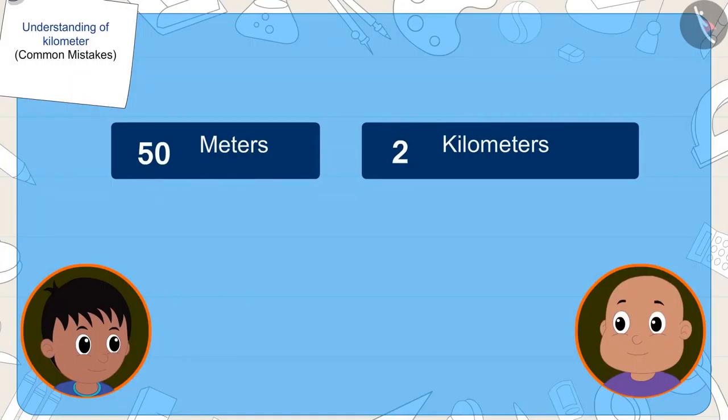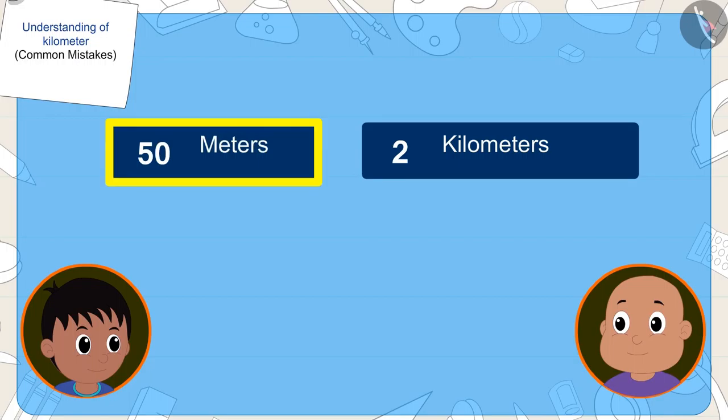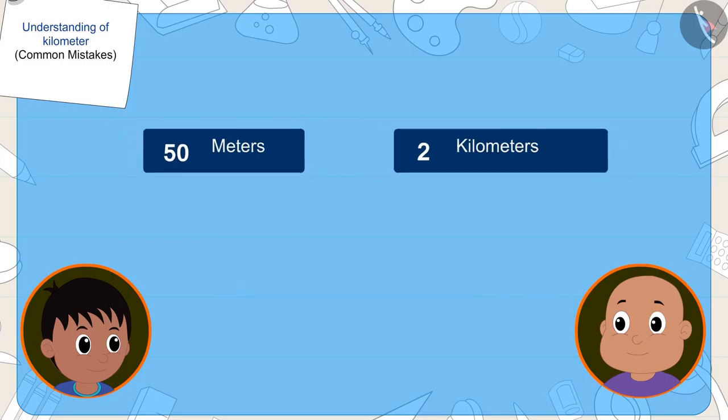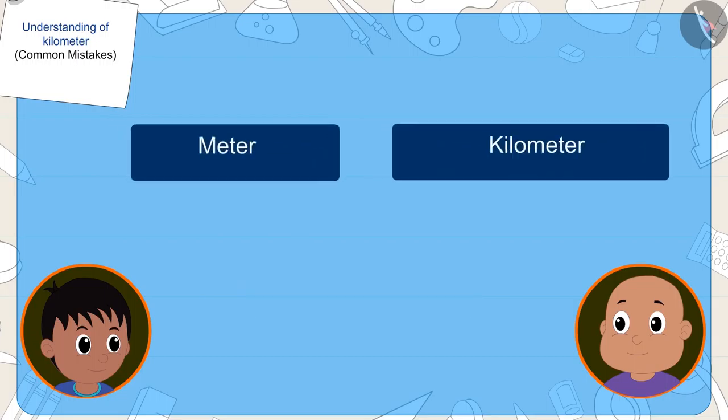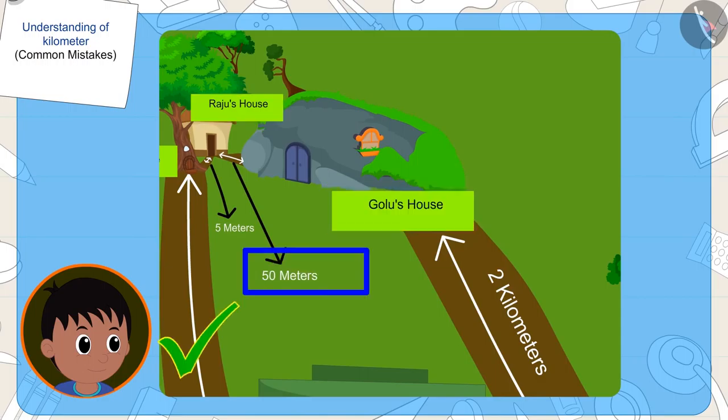His house is two kilometers away from Golu's house. And Raju's house is fifty meters from Golu's house. Even though two is less than fifty, but because the meter is smaller than kilometer, Raju's house is closer to Golu's house.